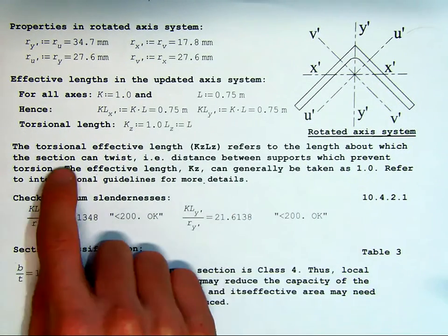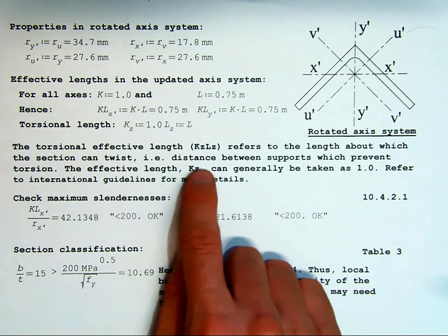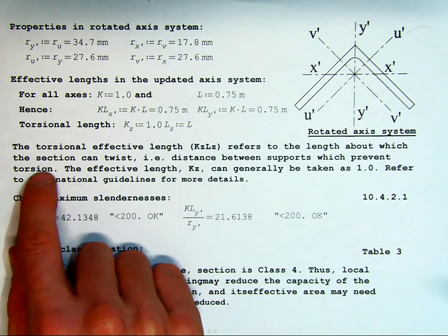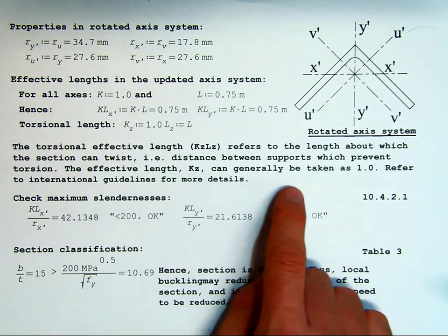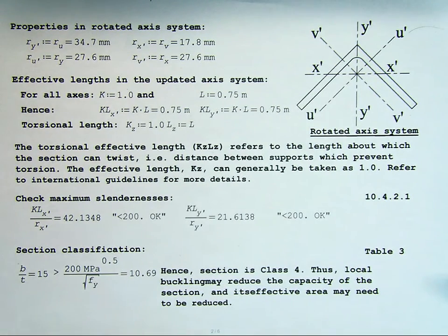Generally, the torsional effective length, kz·Lz, refers to the length about which the section can twist, i.e. distance between supports which prevent torsion. The effective length, kz, is generally taken as 1, and then if there are some additional guidelines available, however, generally, it's safe to take that as a value of 1.